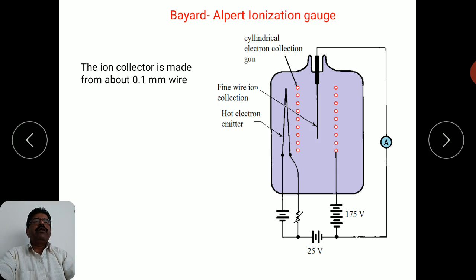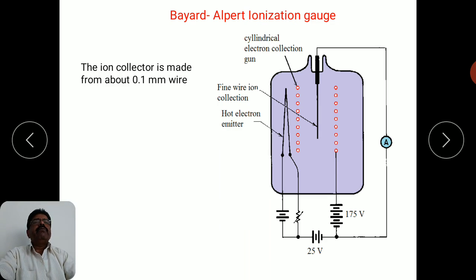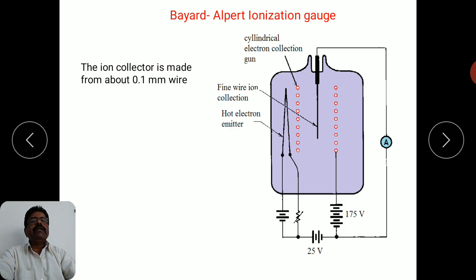Let us see the actual mechanism and design of this new ionization gauge designed by Bayard and Alpert. This diagram shows the new Bayard-Alpert ionization gauge, which removes those particular technical faults, increases the limit, avoids the high X-ray current at the plates, and further improves the measurement limit.